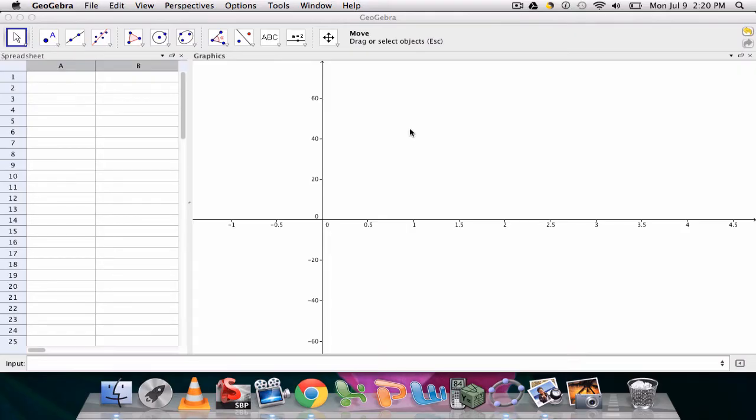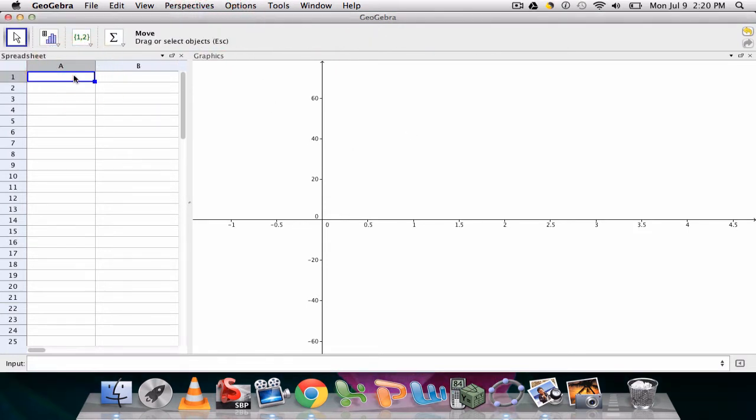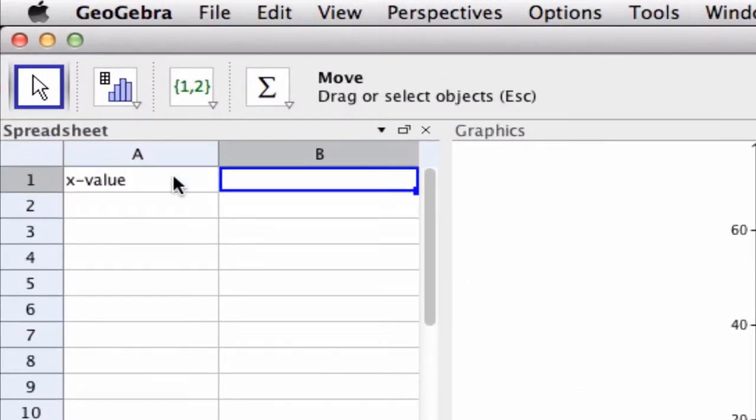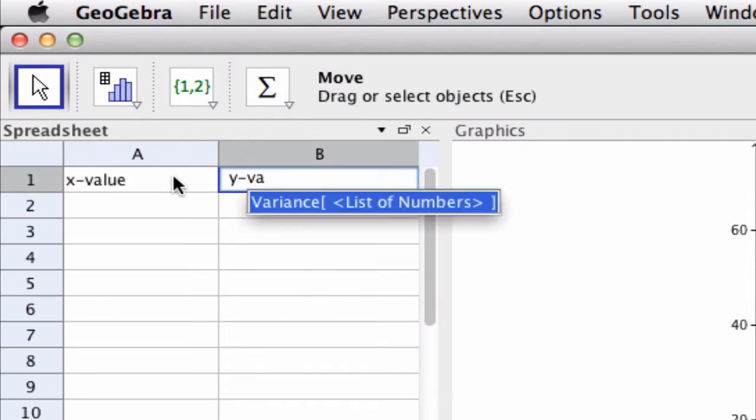We can use the graphics and spreadsheet view to quickly analyze the line of best fit. We can have students enter in values, give them x and y values, and then quickly plot them and apply the tool.